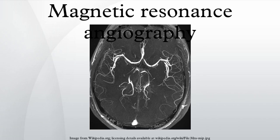Magnetic resonance angiography is a group of techniques based on magnetic resonance imaging to image blood vessels. Magnetic resonance angiography is used to generate images of arteries in order to evaluate them for stenosis, occlusions, aneurysms or other abnormalities.